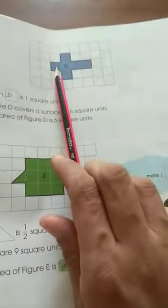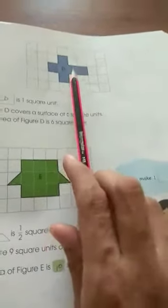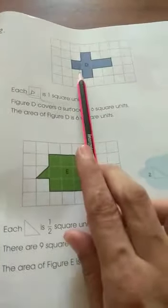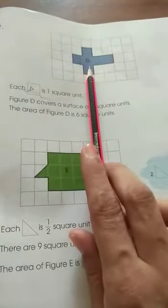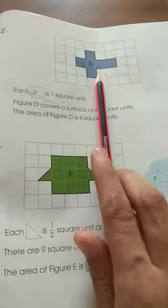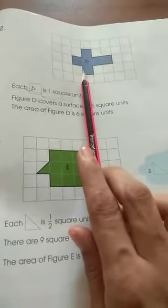You will count it like this. 1, 2, 3, 4, 5, 6. So, each square is 1 square unit. It means it is representing 1 unit. 1 square unit. And square means, of course, you know the shape of a square. Square has all sides equal.